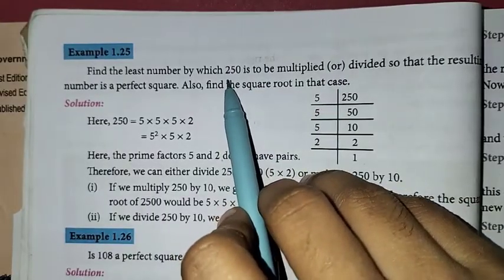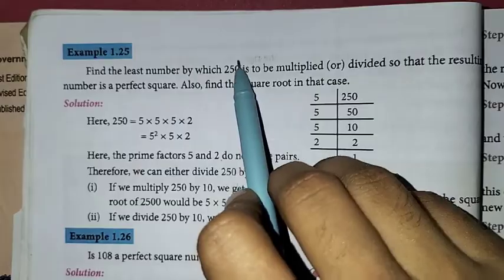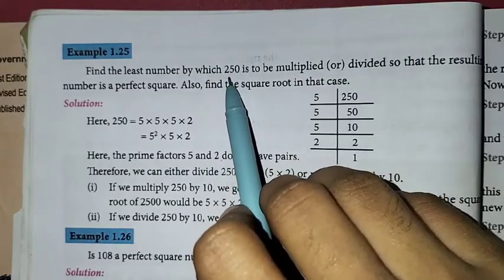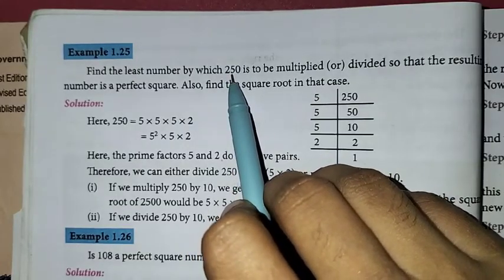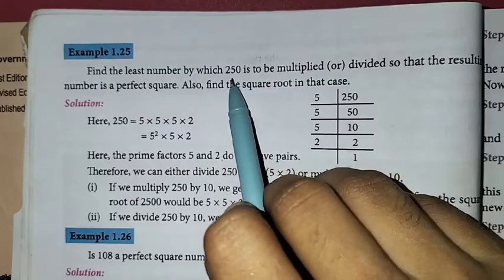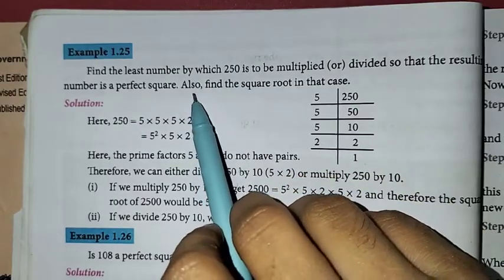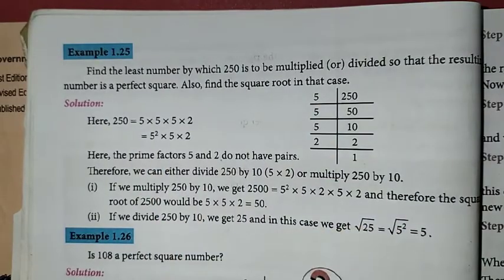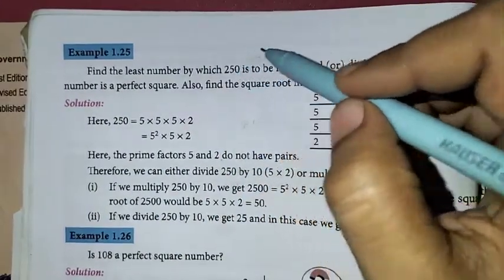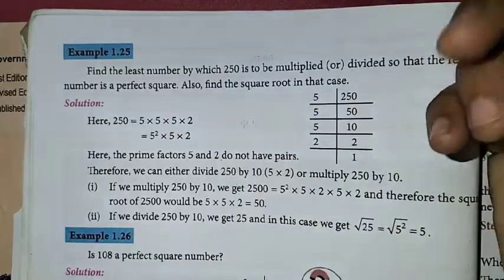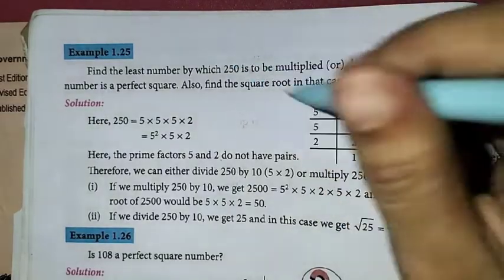It is perfect square. What is the least number? 250 is not a perfect square. What number do you multiply or divide? It is perfect square. Also a square root in that case. That is multiply one number, divide one number, square root one.